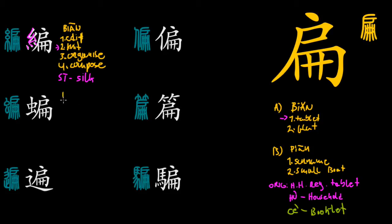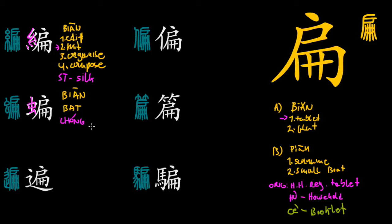The second character in the series is also pronounced biān, and it means bat — the animal. The semantic element is 虫, chóng, usually translated as insect, but it can be found in many characters representing lizards, snakes, or similar creatures. A bat is arguably not a lizard but approximates that, which is why they chose to include this element.